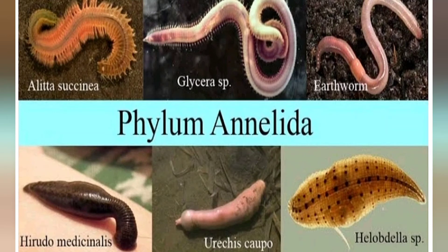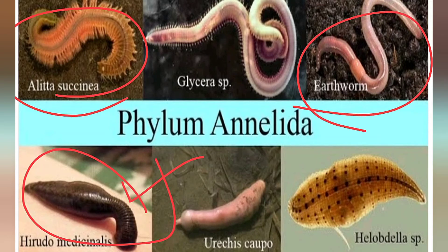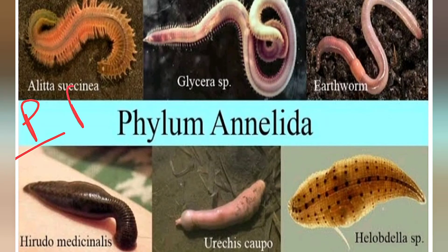Next is Phylum Annelida. A common point of confusion is differentiating Platyhelminthes, Aschelminthes, and Annelida. Platyhelminthes have a flat body, Aschelminthes have a round cylindrical body, and Annelida also have a rounded body but the key difference is that the Annelida body is segmented — it has metameric segments.